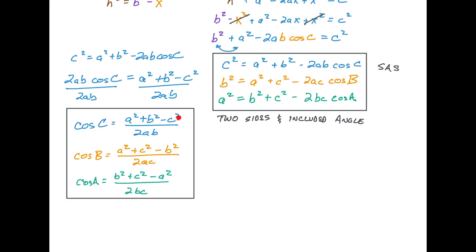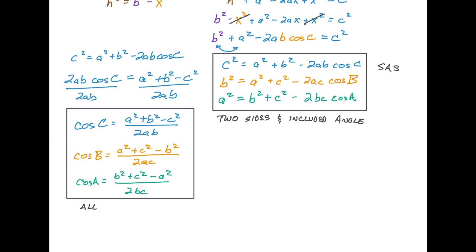Notice in these formulas, the angle you're solving for corresponds to the side that's being subtracted in the numerator — C is subtracted when finding cosine C, B is subtracted when finding cosine B, and so on. These values all line up. This is when you have all three sides and you're looking for an angle. If you've got two sides and an included angle, use the other set of formulas. Any other option, you're going to use the sine rule.